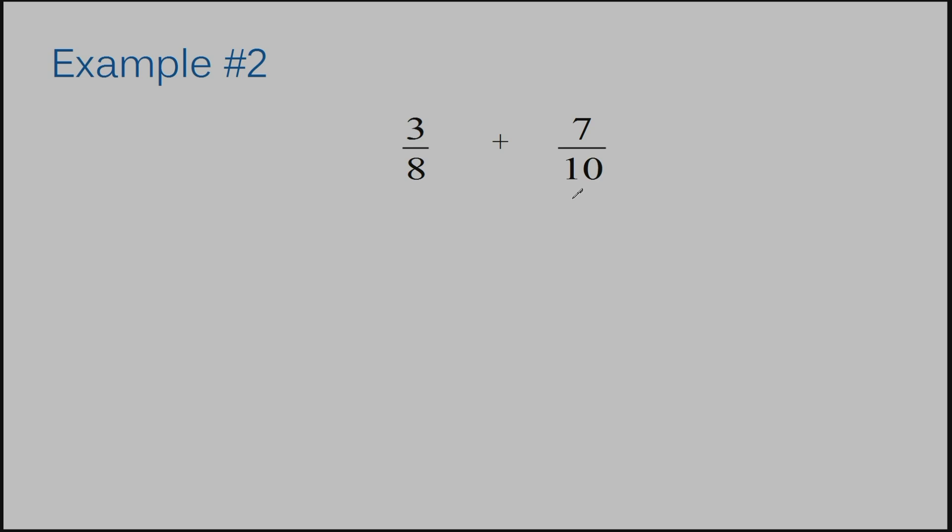What will happen is you'll just have to simplify your answer at the end. So, let's try multiplying our denominators together to get a common denominator. I'm going to rewrite both of these numbers directly below, but with a denominator of 80.